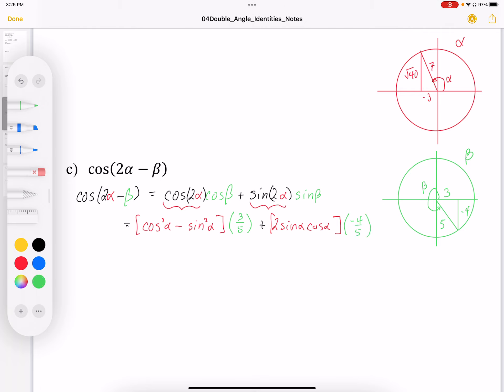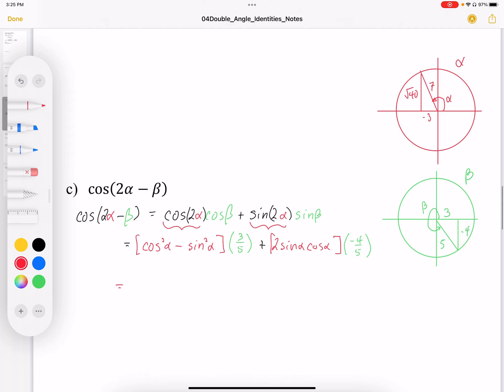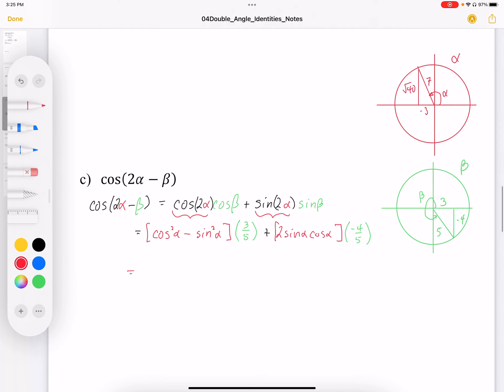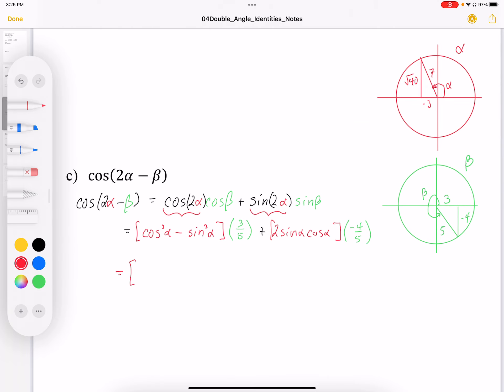So now I've got my identities. I can now replace my cosine alpha with the cosine in this picture. So it's negative 3 over 7. So where I see the cosine, I'm going to replace that cosine squared alpha or just the cosine part with negative 3 over 7.